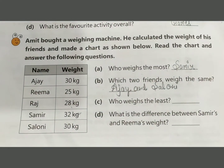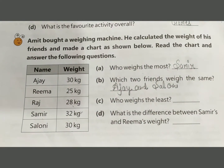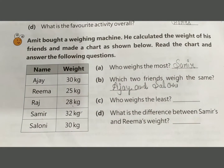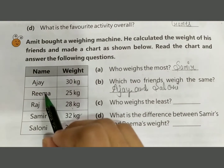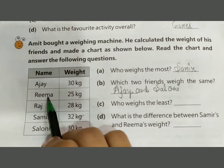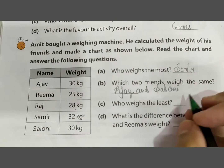Next: who weighs the least? That is 25 kg — Reema's weight is the least. Write Reema.